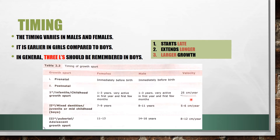The second growth spurt is during the mixed dentition period, also called juvenile or mid-childhood. In females it occurs at 7 to 9 years, and in males at 8 to 11 years — you can see it starts later in males. The velocity is 5 to 6 centimeters per year. In females the duration is 2 years, but in males it extends to 3 years, illustrating the second L — it extends longer.